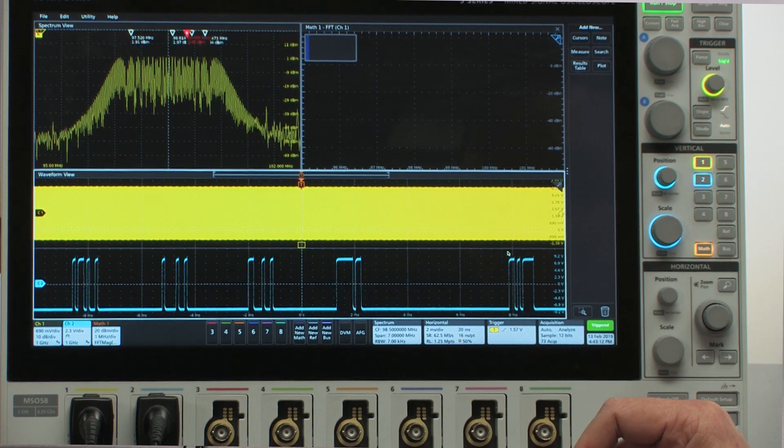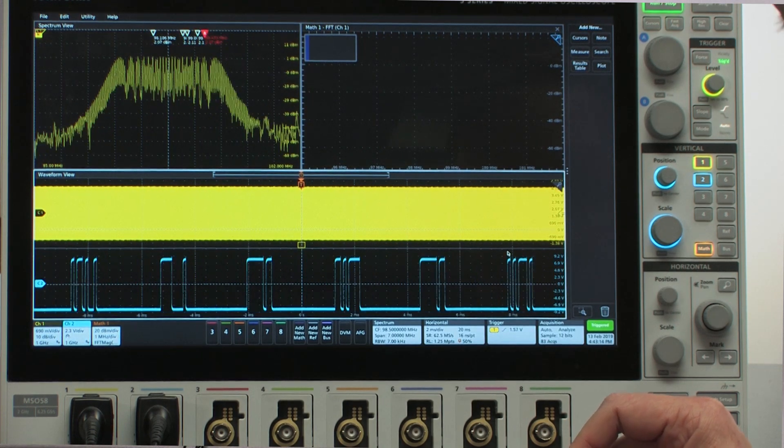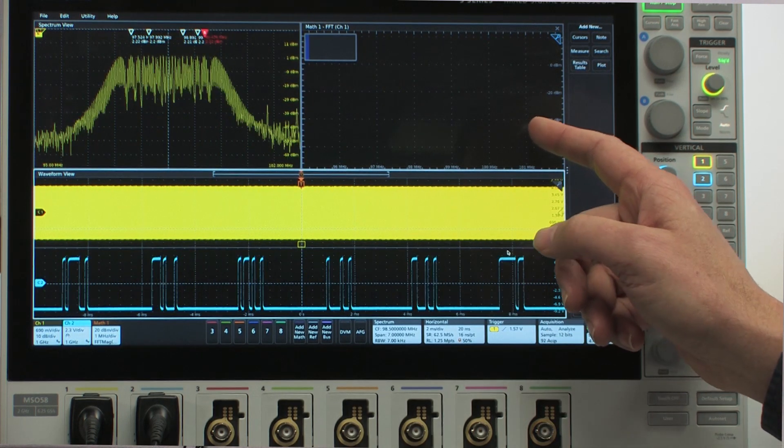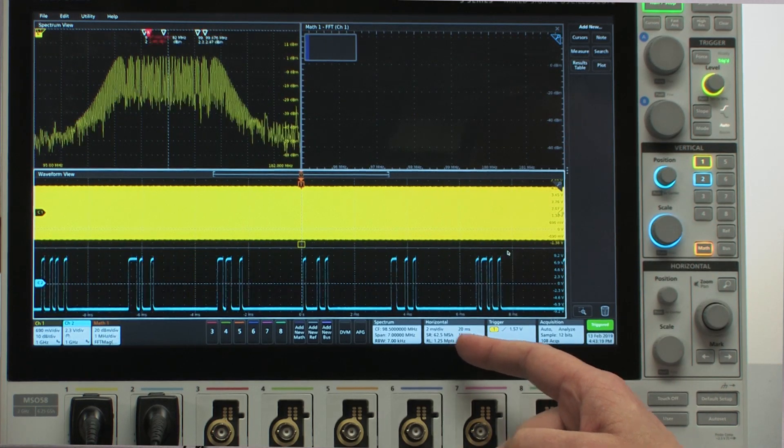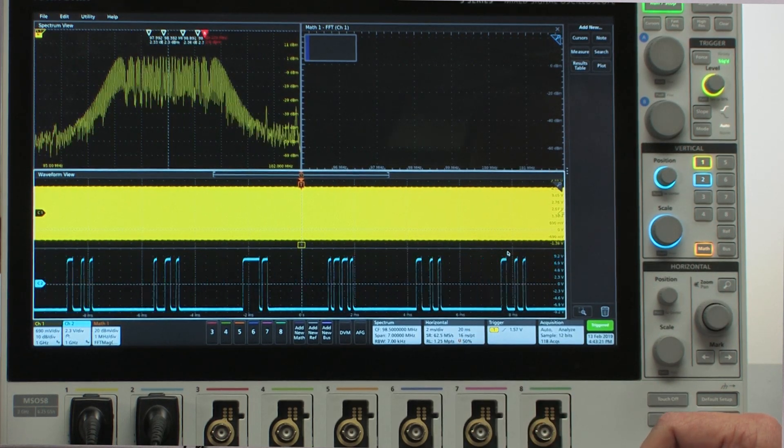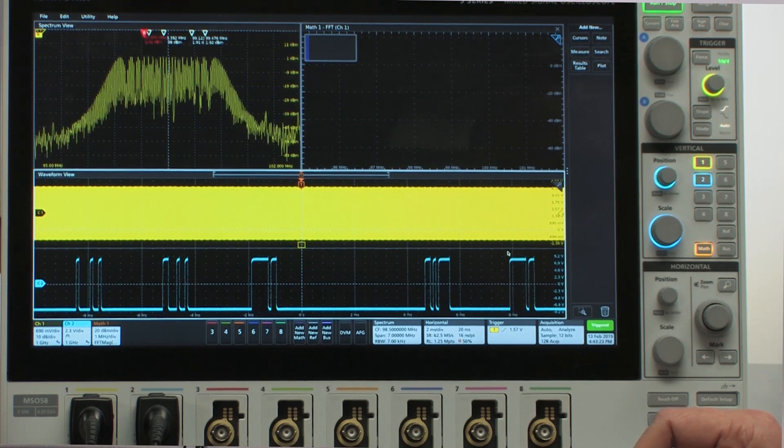Yet my FFT view is now not only not showing a flat line, it's not showing anything. The reason why: if we look down here to our acquisition settings, we're acquiring at sixty-two point five mega samples per second, which is not enough to capture the Nyquist information on a hundred megahertz spread spectrum clock.